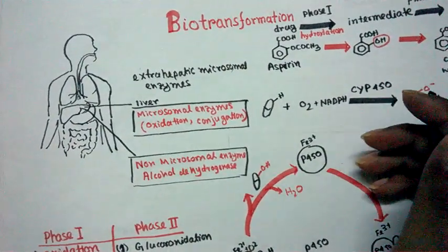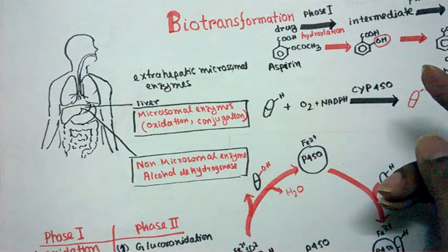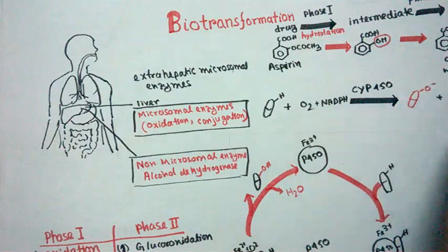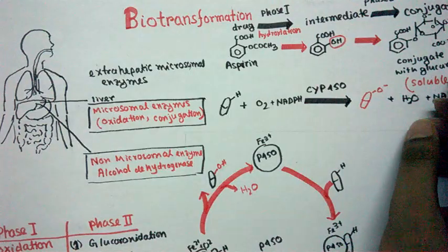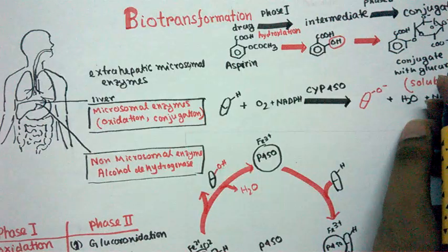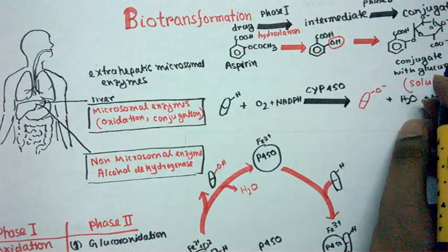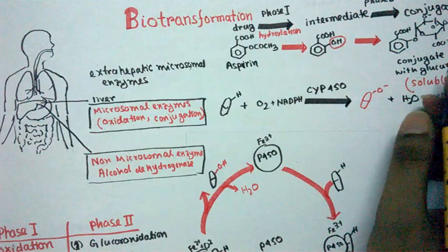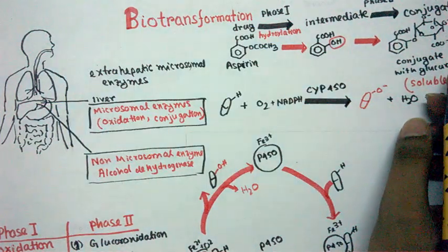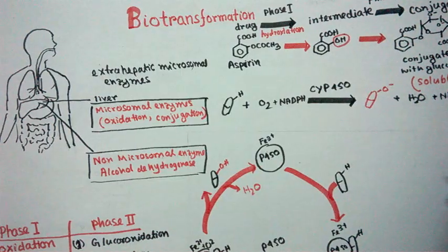The key concept of biotransformation is that the liver's goal is to make the drug increasingly soluble. If a drug is more water-soluble, it can be easily excreted in the urine. If a drug is not made more soluble, it accumulates in the body and can build up toxicity — so biotransformation is a safety mechanism. There are two sets of reactions: phase 1 (oxidation/redox, hydroxylation, hydrolysis) and phase 2 (glucuronidation, acetylation, methylation, and GSH conjugation via non-microsomal enzymes).